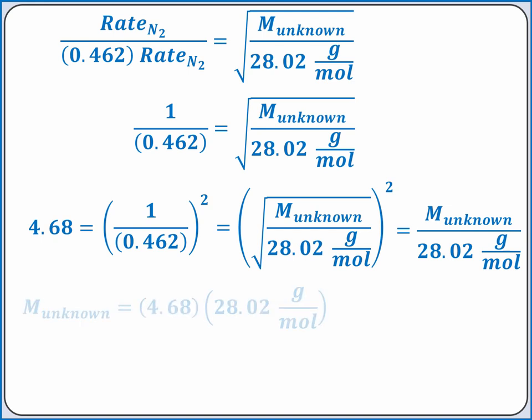Rearranging the equation to solve for the molar mass of the unknown, we get 4.68 times 28.02 grams per mole. This is equal to 131 grams per mole. This is the molar mass of xenon, which should be our unknown gas.